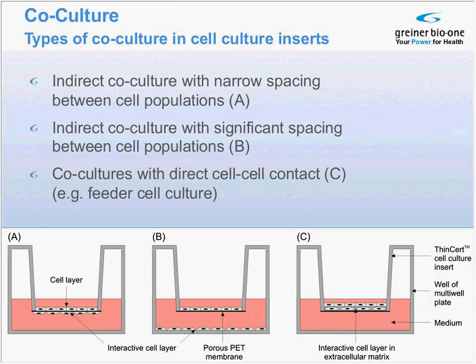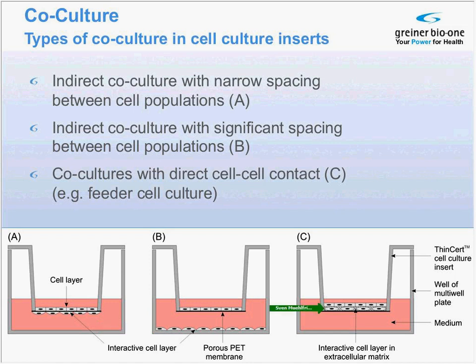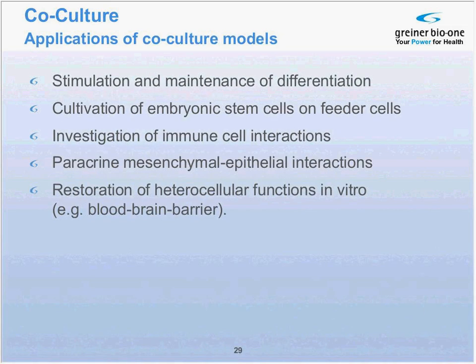I'd like to provide basics, protocols, and proof of principle for co-culture experiments. There are different ways to establish co-cultures. One way is to cultivate cells on one side of the membrane while the co-cultivated cell line is on the other side. You can also bring the co-cultivated cells to a greater distance by placing them on the bottom of the carrier plate. Or you can carry out co-cultures by embedding one cell type into a collagen gel or another ECM gel and seeding the second cell population on top — this is typically done when reconstructing a skin model.